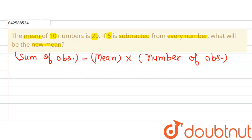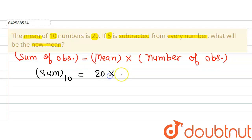Putting in the values: there are 10 observations, so sum of 10 observations equals mean, that is 20, multiplied by number of observations, that is 10, which gives us 200. So this is the sum of 10 observations.